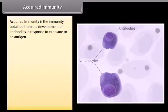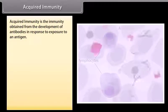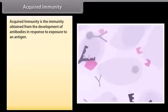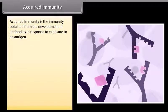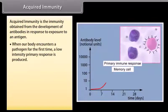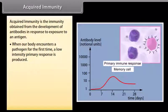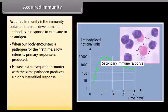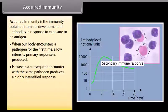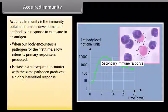Acquired immunity is the immunity obtained from the development of antibodies in response to exposure to an antigen. When a body encounters a pathogen for the first time, a low-intensity primary response is produced. However, a subsequent encounter with the same pathogen produces a highly intensified response.